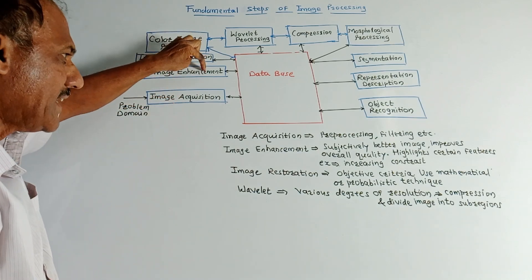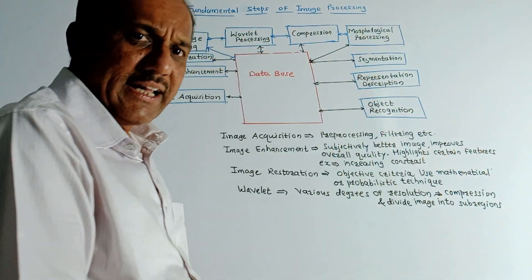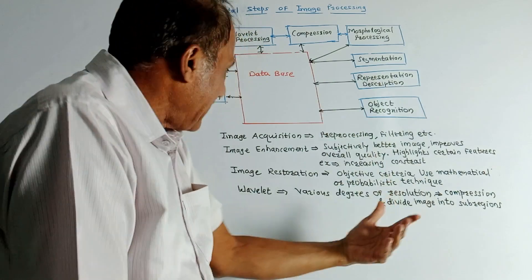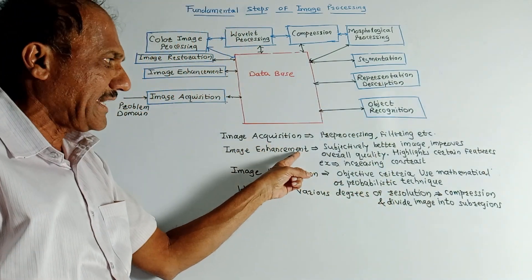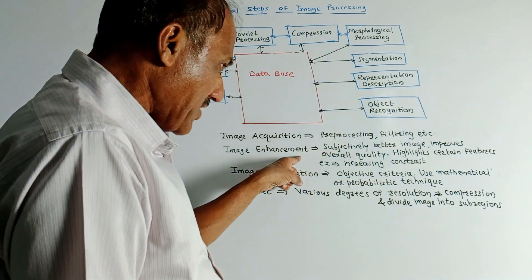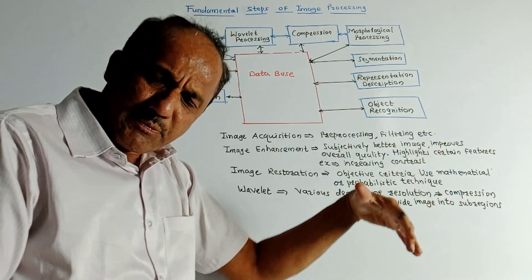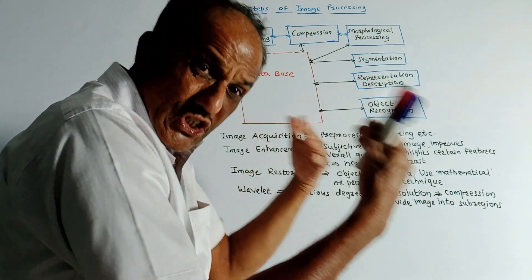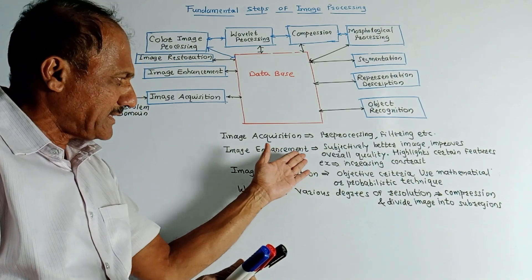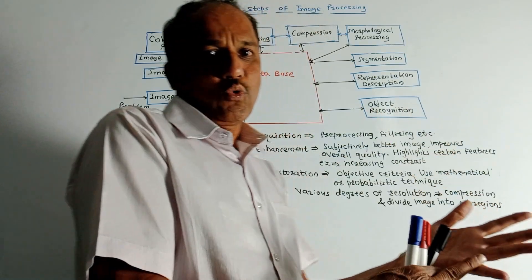The next block is image enhancement. Image enhancement techniques are used to obtain a subjectively better image. This technique improves the overall quality of an image and is used to highlight certain features. A very good example is increasing the contrast ratio of an image. This is a subjective criteria.